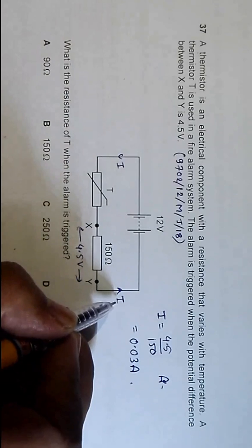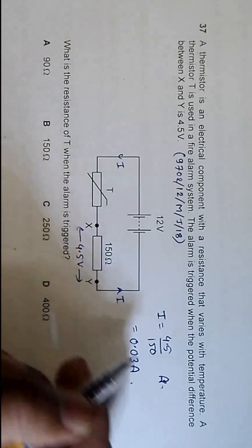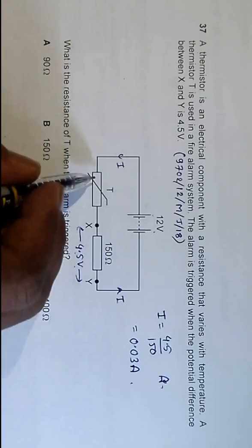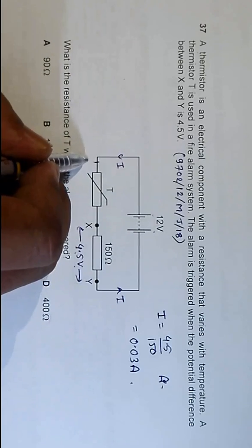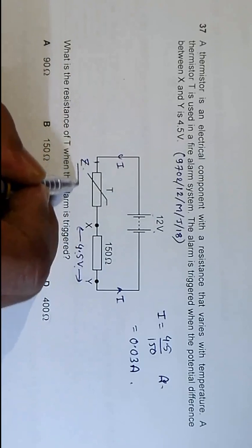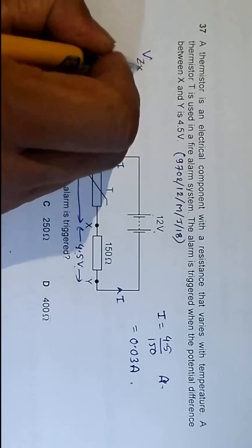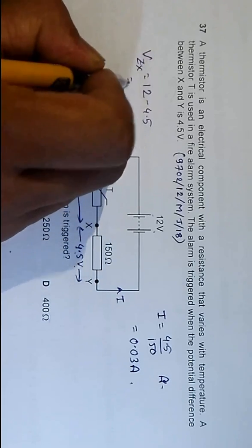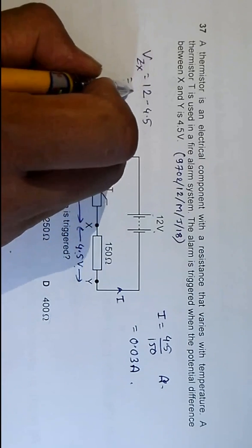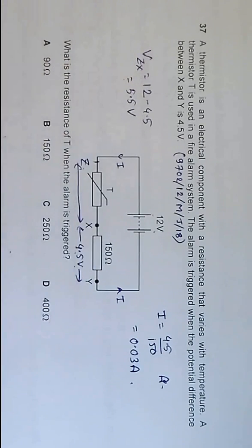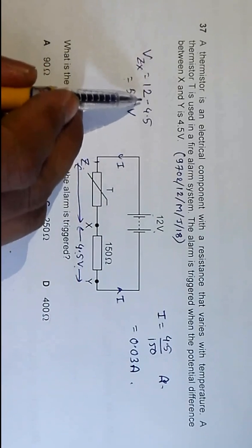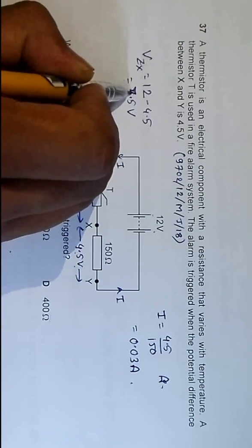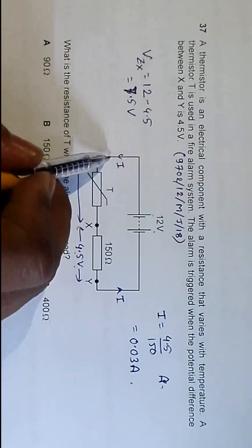And since we have 4.5 volts here and the EMF is 12 volts, the PD here, let's name it VJdx, will be equal to 12 volts minus 4.5 volts. That will be equal to... wait, if I'm not mistaken... actually, 12 minus 4.5 is 7.5 volts. So now we have a current of 0.03 ampere.